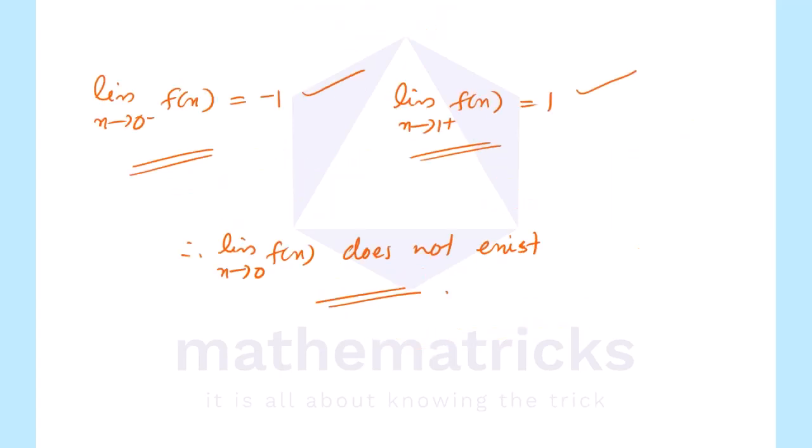Since for a limit to exist, the left-hand limit and right-hand limit must be equal. Here, the left-hand limit is negative 1 and the right-hand limit is positive 1. Since they are not equal, the limit of f of x as x tends to 0 does not exist. Thank you.